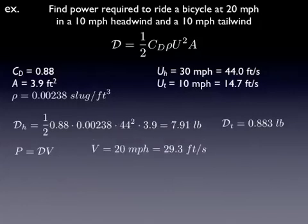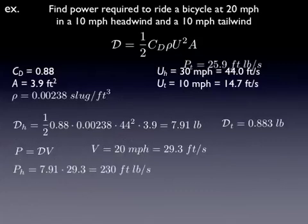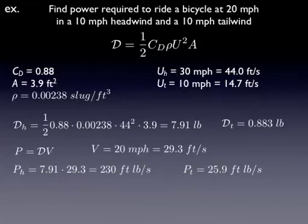Power is that drag force times the forward velocity. So it's 20 miles per hour. We convert that to 50 feet per second. And it's simple to calculate. Power in a headwind when you're traveling into a headwind is again almost 10 times as high as it is when you're traveling with a tailwind.